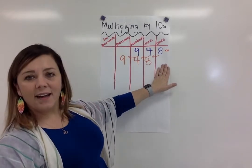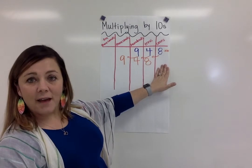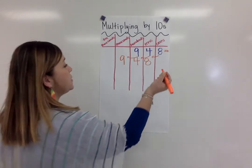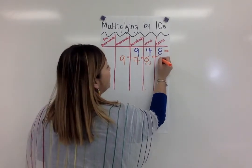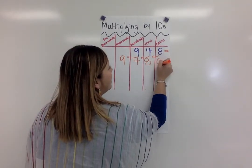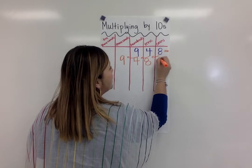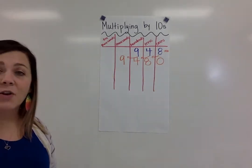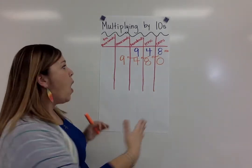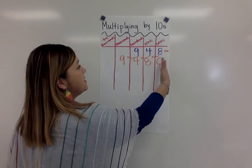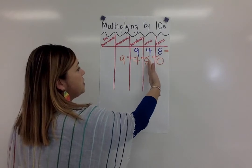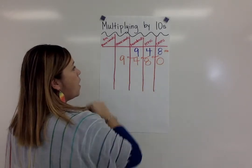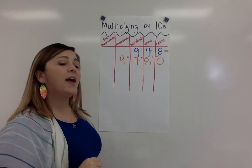Remember, we cannot leave this place empty, so we need to put a placeholder zero there. So when I multiplied by 10, look what happened — all of those digits shifted over to the left one place.